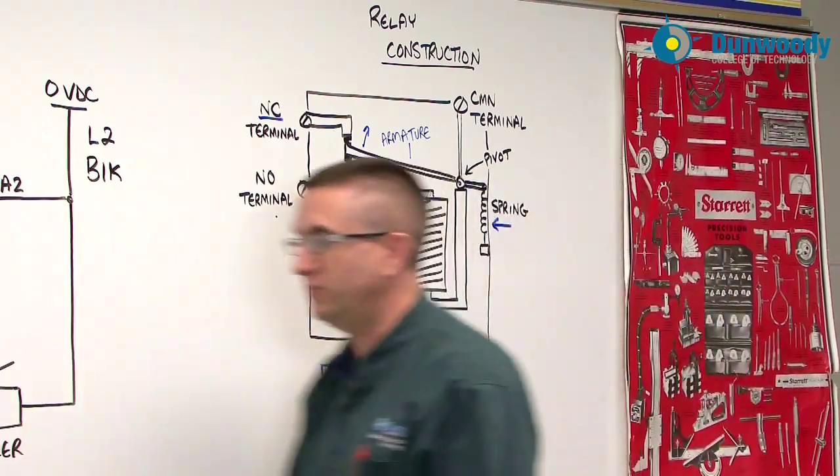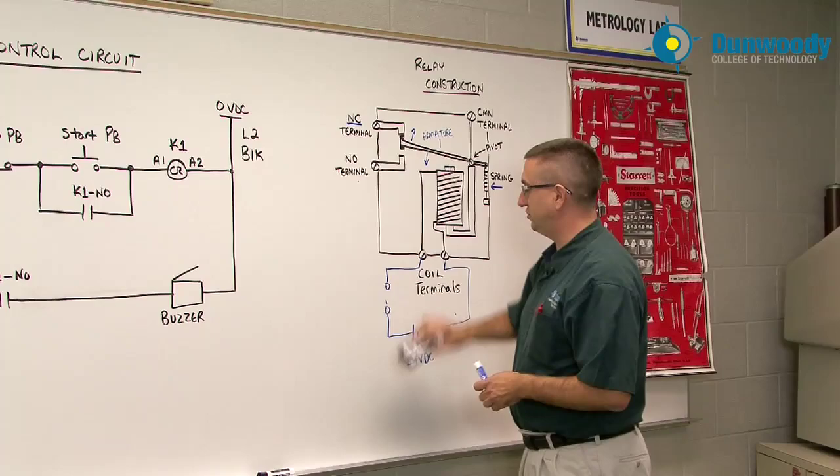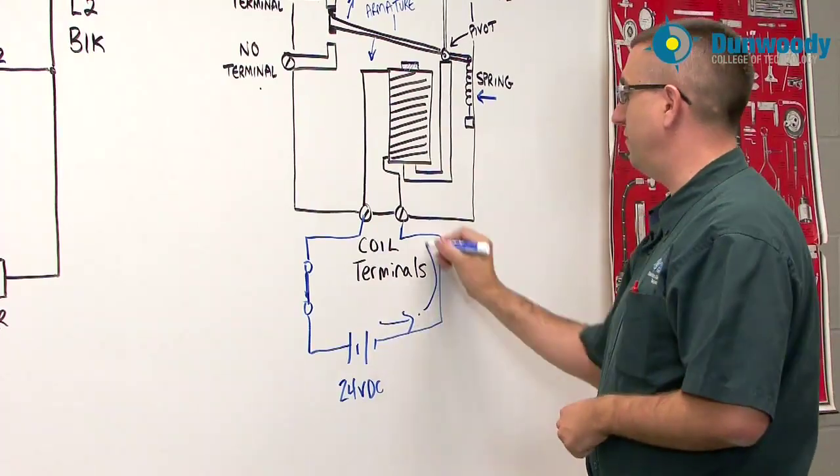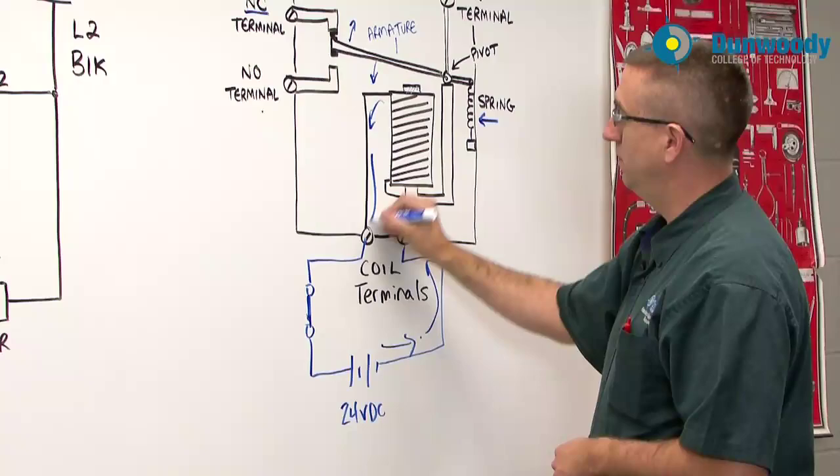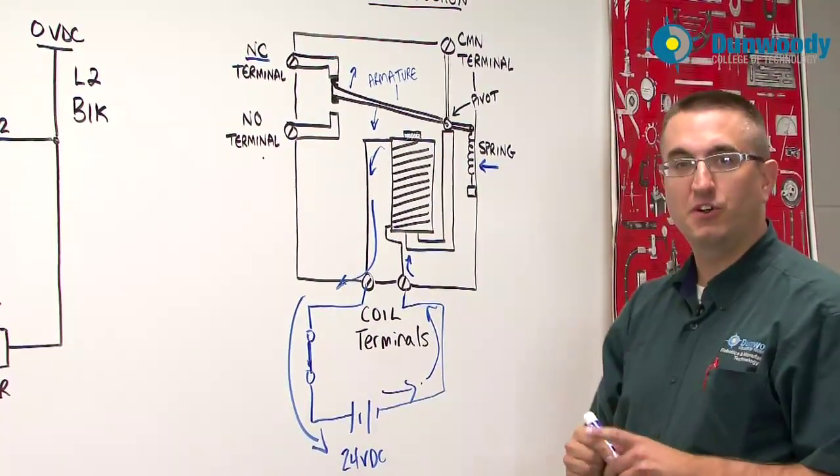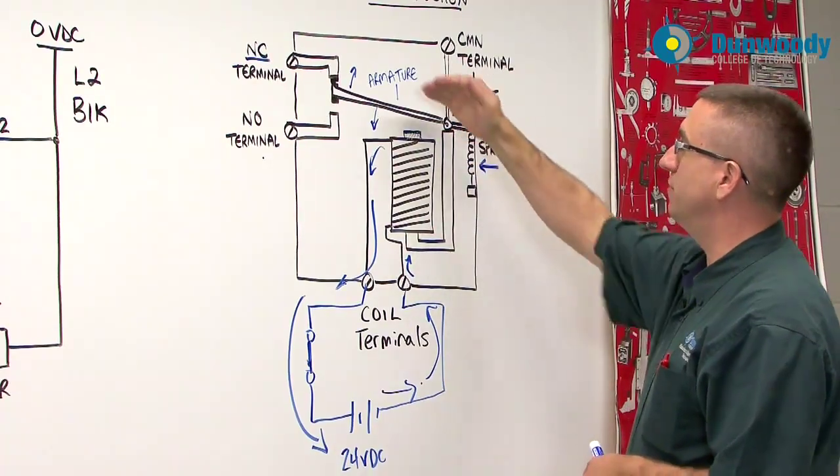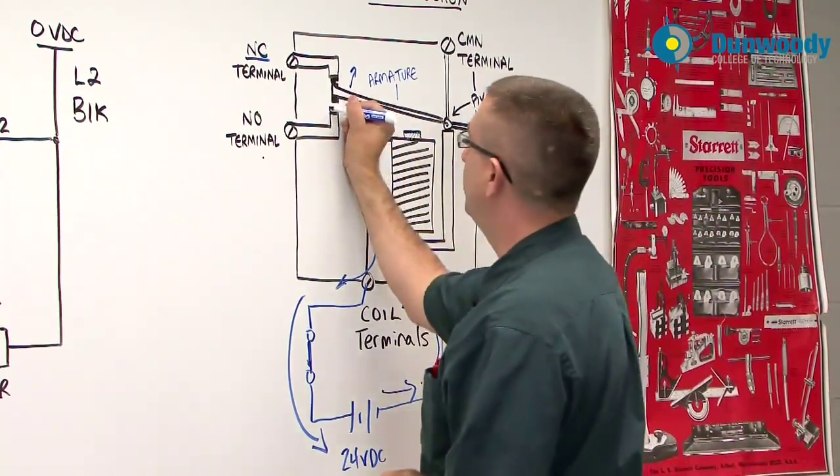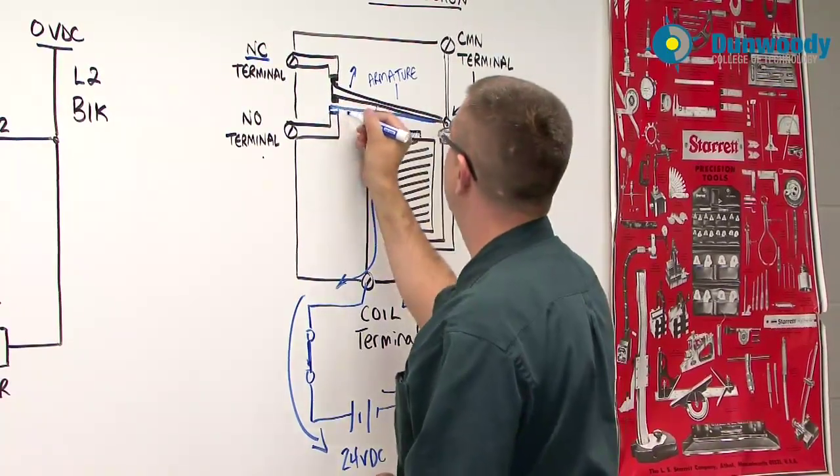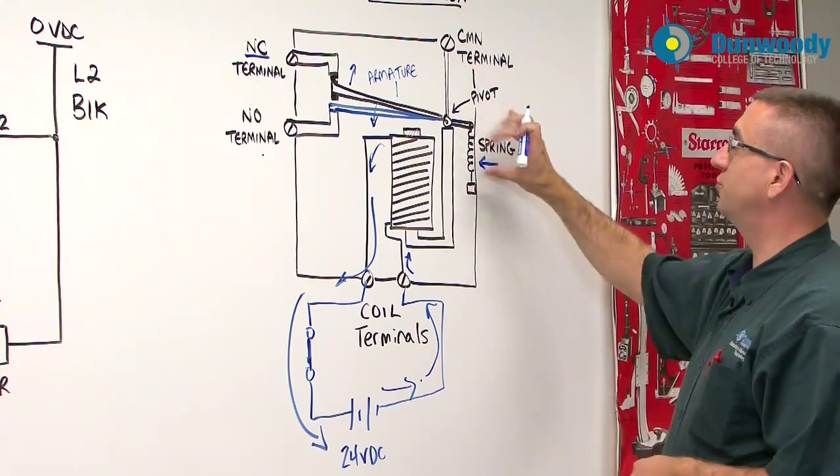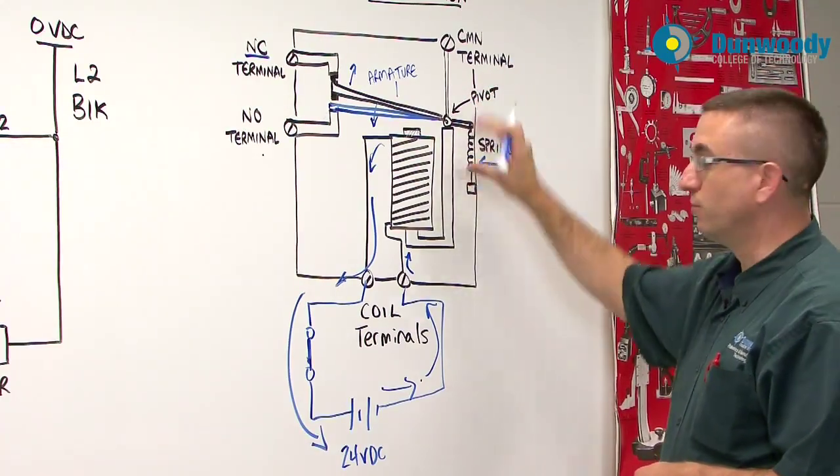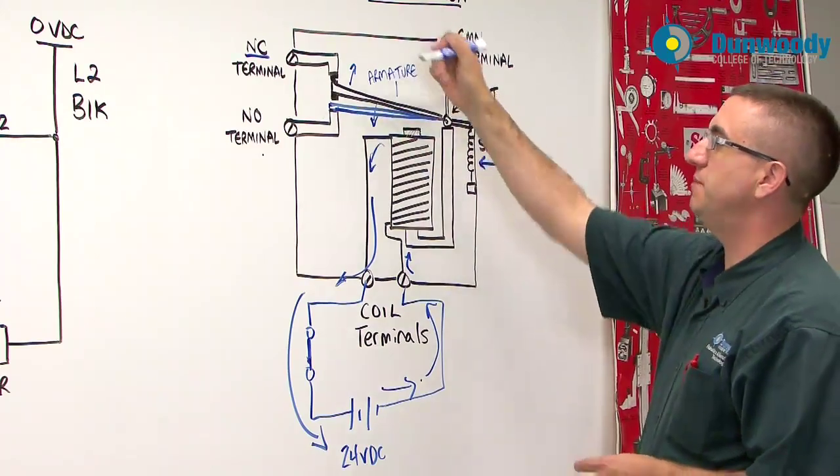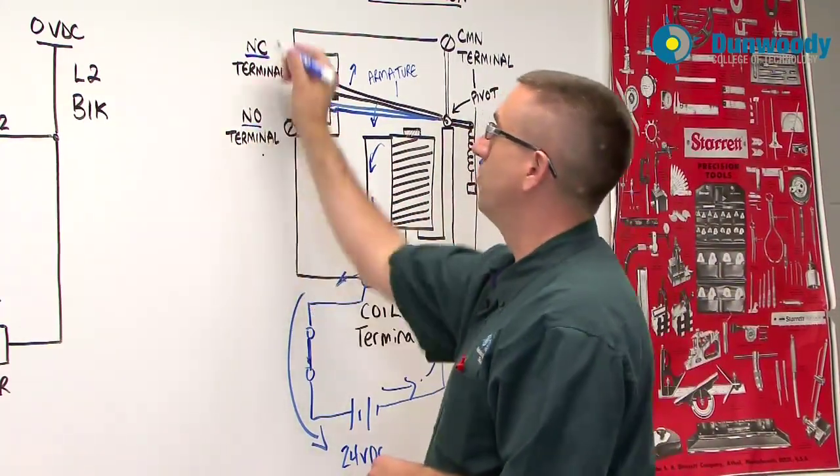As soon as I energize this, if I was to close this switch, now I have current flow. So the switch is closed and I'm going to get current flow up and through my coil and back to the source. As soon as there is current flow this becomes an electromagnet. At that point the armature is pulled down and now I'm going to go down to the normally open contact. So we'll use blue to represent that. But the armature would change states and it would now be sitting down here, and it would be pulling on the spring a little bit. So the second that I release this energy or open this switch, the magnet goes away and the spring pulls back on it and takes it back up.